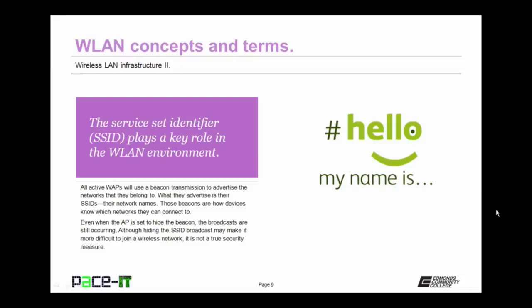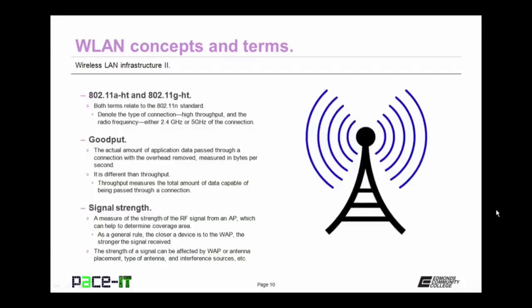Although hiding the SSID broadcast may make it more difficult to join a wireless network, it's not a true security measure because the broadcast is still occurring. Now let's talk about 802.11a-ht and 802.11g-ht. Both of these terms relate to the 802.11n standard. They denote the type of connection — a high throughput connection — and the radio frequency, which will either be the 2.4 GHz or the 5 GHz radio frequency band.